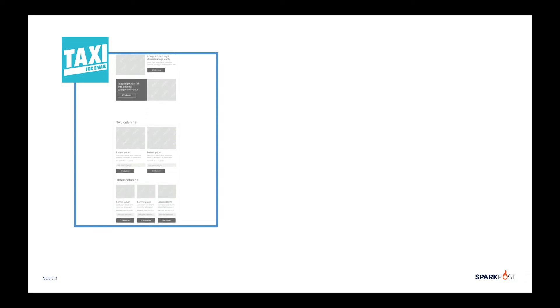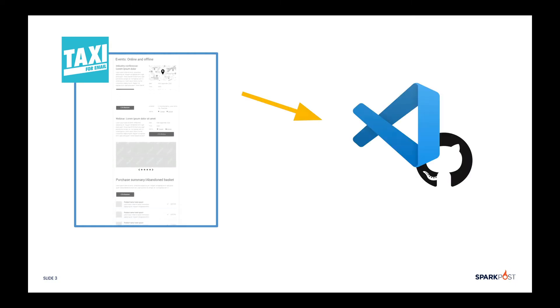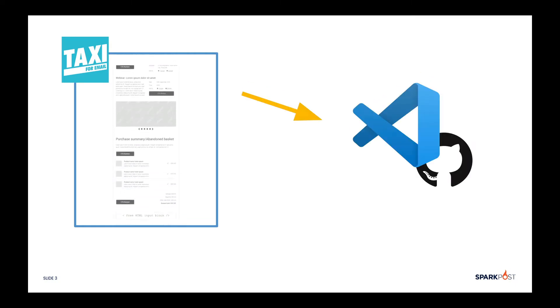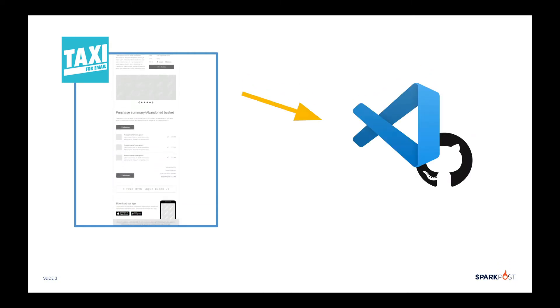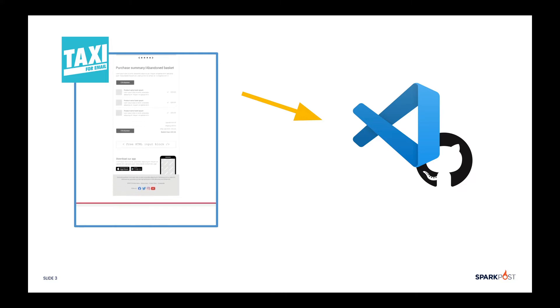An Email Design System in Taxi powers all the emails that your team builds. This is a living document, so there will be occasions when you want to add or update modules, change images or text, and so on. These updates all require HTML changes in your coding platform, such as VS Code or GitHub.